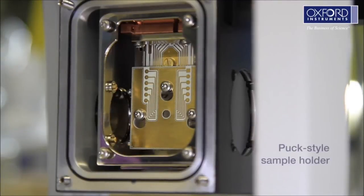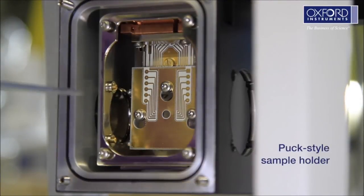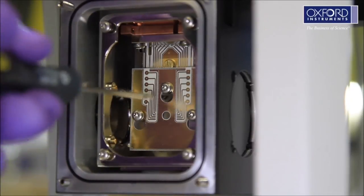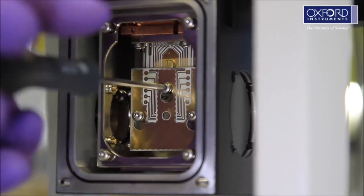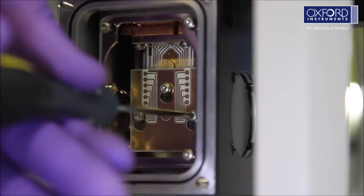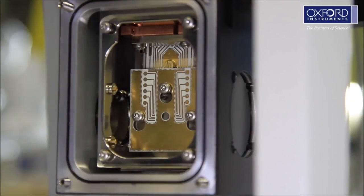The pack style sample holders are unique to the OptiStat Dry. They provide 12 experimental electrical connections for you to use. Unscrew the three screws holding the pack sample holder by two or three turns.